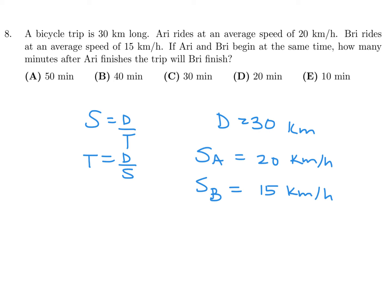The time for Ari is distance over speed, 30 over 20, which is 1.5, so 1 hour and 30 minutes. The time for Bri is 30 over 15, which is 2 hours. How many minutes after Ari finishes will Bri finish? There's a 30-minute difference between those two, so 30 minutes is the answer. Number 8 is C.